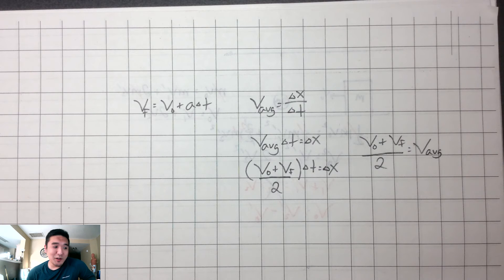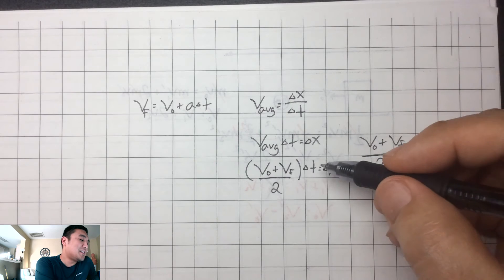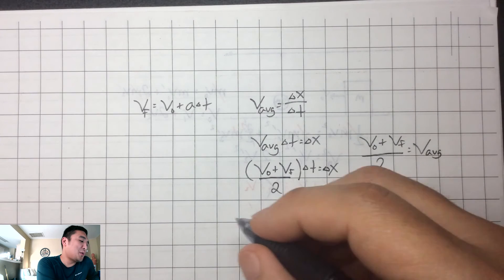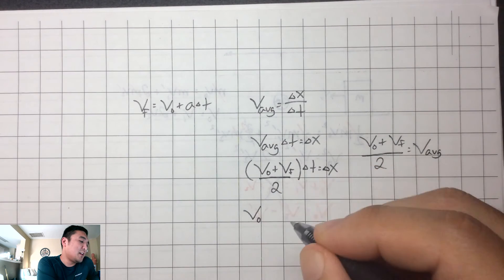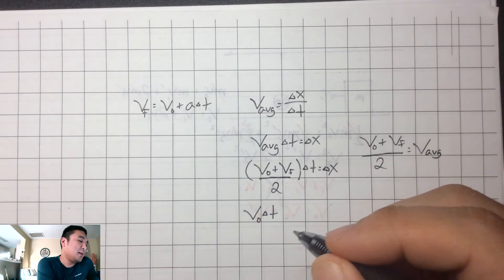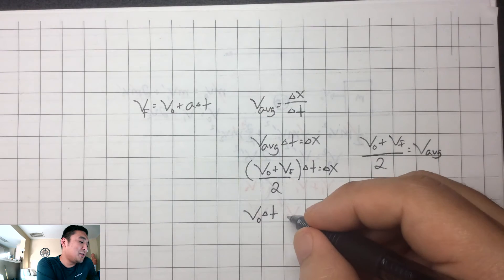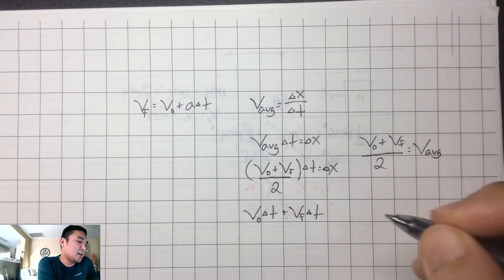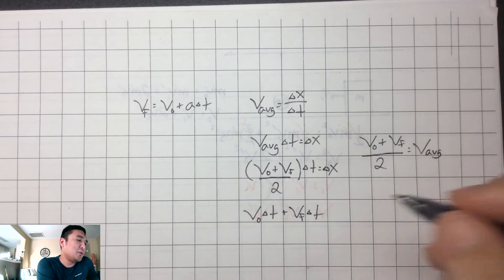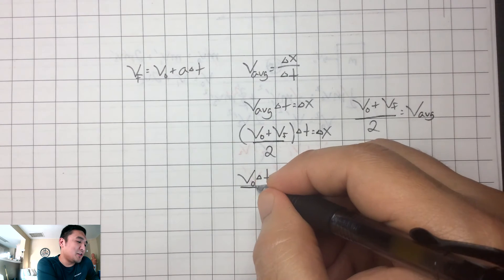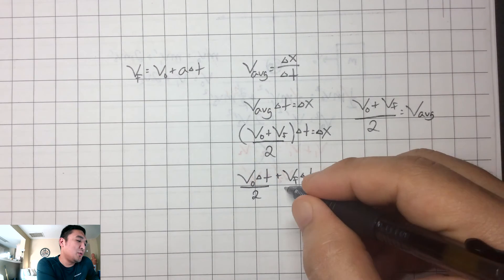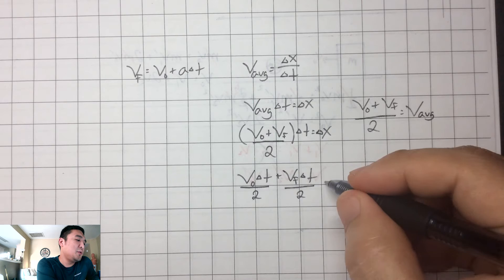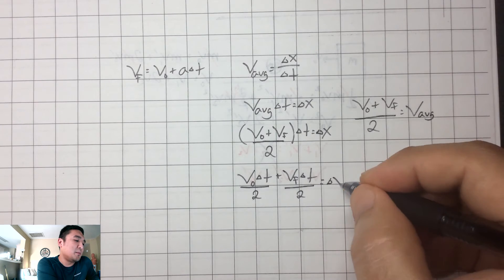Well, let's see what else we can do with that. This time, we can distribute it through. So I've got initial velocity times time, that's divided by two. But we also have this other one that's final velocity times time, that's also divided by two. Let's keep that, let's actually do that individually. Divided by two and divided by two. And that equals a change of position.